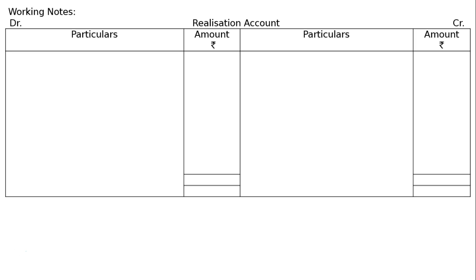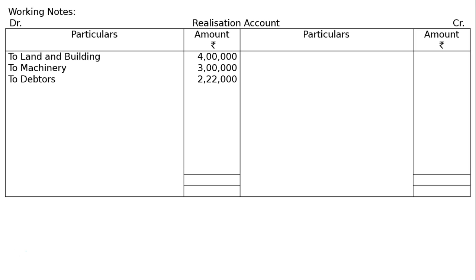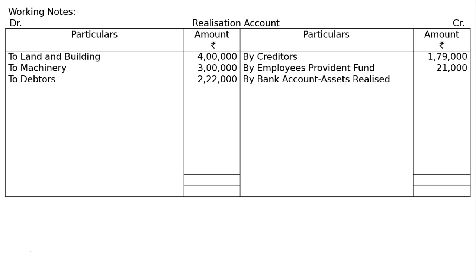In the working notes, the realization account format: transfer the assets — land and building Rs. 4 lakhs, machinery Rs. 3 lakhs, debtors Rs. 2 lakhs 22 thousand. On the credit side: creditors Rs. 1 lakh 79 thousand, employees provident fund Rs. 21 thousand. The firm was dissolved on 1st April 2017.